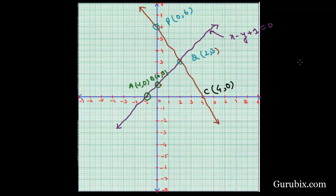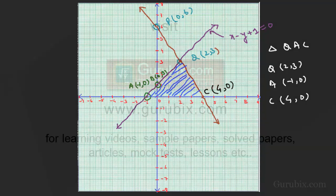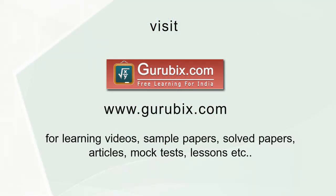Therefore the required triangle is triangle QAC. The coordinates of Q are (2, 3), the coordinates of A are (minus 1, 0), and the coordinates of C are (4, 0). We now shade the obtained triangular region.